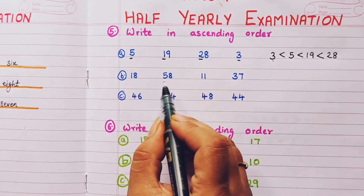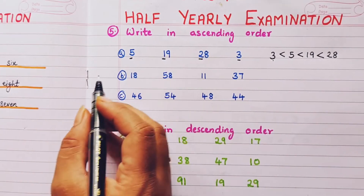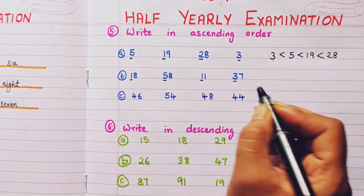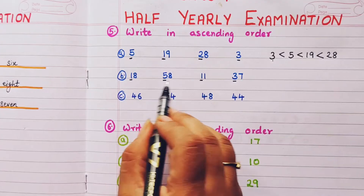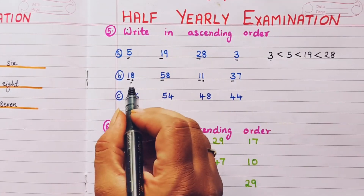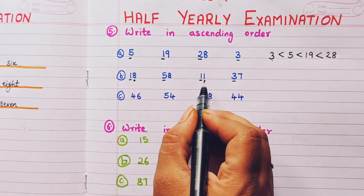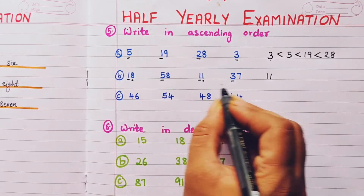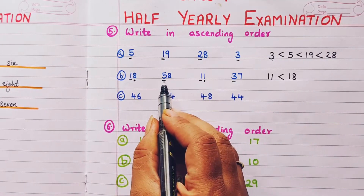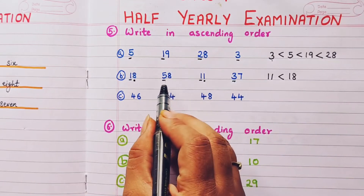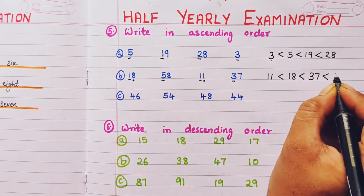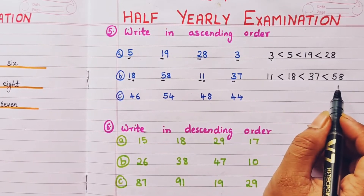Next set: 18, 58, 11, and 37. Compare tens digits: 1, 5, 1, 3. Two numbers have 1 in tens place — compare ones: 8 and 1. So 11 is smallest, then 18. Then compare 37 and 58: 3 is smaller than 5, so 37 comes before 58. Ascending order: 11, 18, 37, 58.